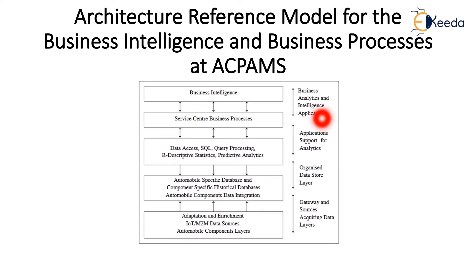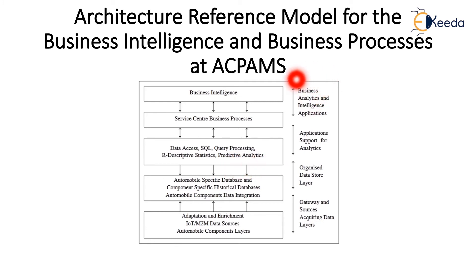The next layer is application support for analytics, with applications handling data access, SQL query processing, R descriptive statistics, and predictive analytics. Then comes business analytics and intelligent applications, and the business intelligence and service center business process. The predictive analytics of the acquired data in databases enables the service to extract knowledge. This architectural reference model for business intelligence and business process at ACPA-MS has been proposed.